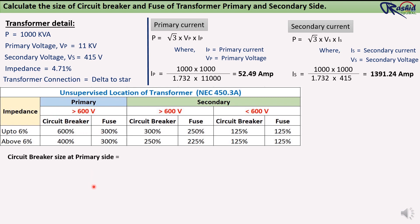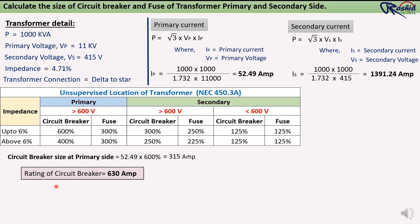Circuit breaker size at primary side = primary current 52.49 × 600% = 315 ampere. Since a 315 ampere VCB (vacuum circuit breaker) is not available in the market, we will select the next bigger size, which is 630 ampere. This 630 ampere VCB is available in the market, so we will use this size.